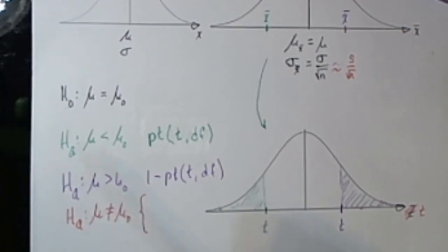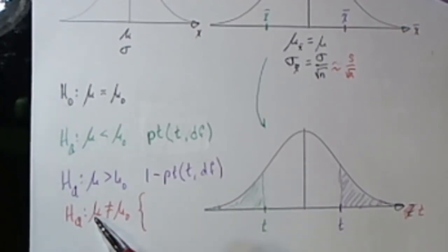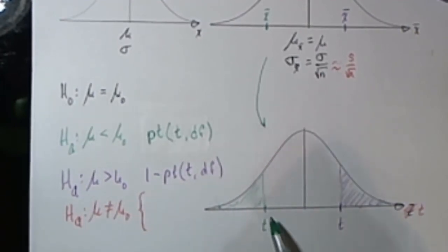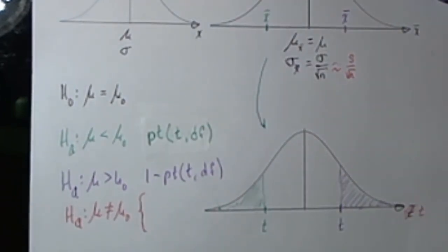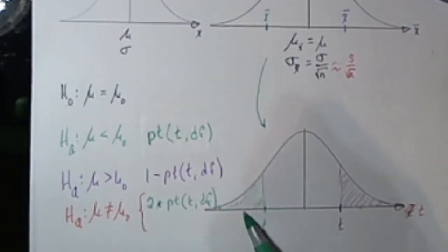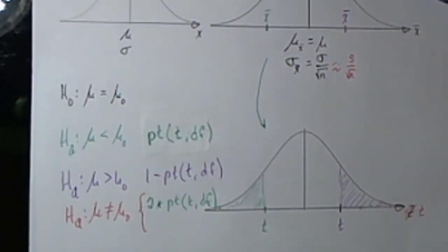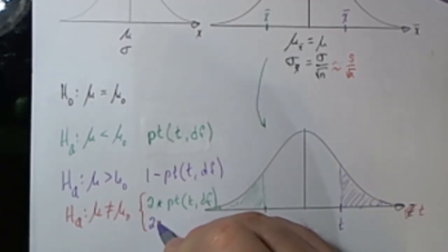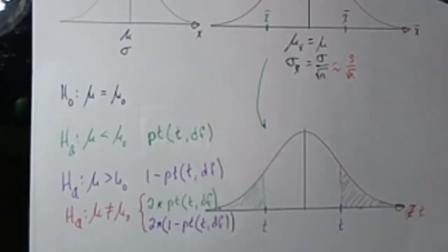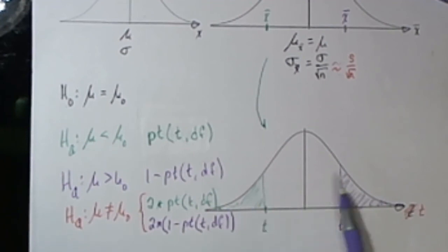Finally, if the alternative hypothesis is stating that mu is not equal to the given value, this is a two-tailed test. You just pay attention to where the test statistic turns up. If your test statistic was in the lower tail, then the p-value is going to be 2 times that area in that lower tail, because it's a two-tailed test — so you find the area in the tail that you're at and multiply it by 2. In the case that your test statistic ends up being positive or above the mean, then you're going to take 2 times the area in that upper tail.